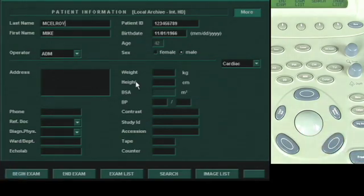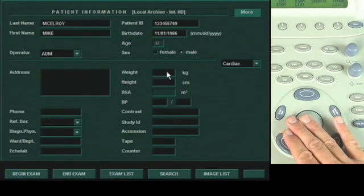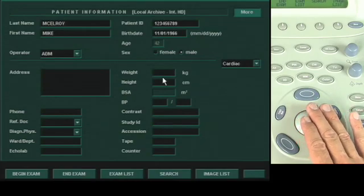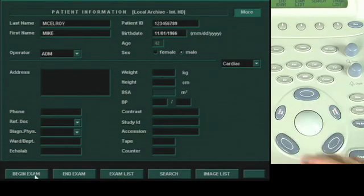And now it will typically bring us up to a second window where it would like the height and weight. When we're done with that, we just select Begin Exam.